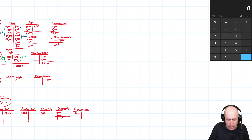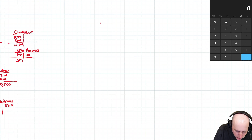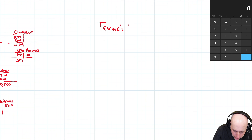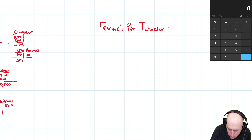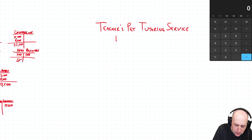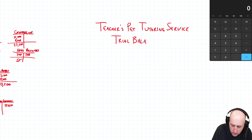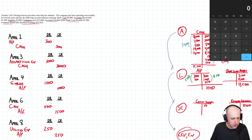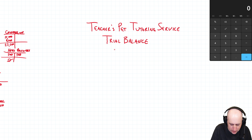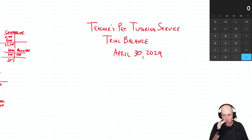Let's go ahead and prepare. We'll start with a three-line title: name of our company — Teacher's Pet Tutoring Service — then the name of the statement we're being asked to make. This is a trial balance, and trial balances are just dated with the last relevant date. This is April 30th, and if you need a year, everything in this workbook is going to be 2029.